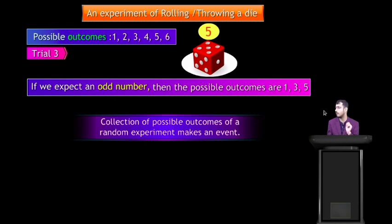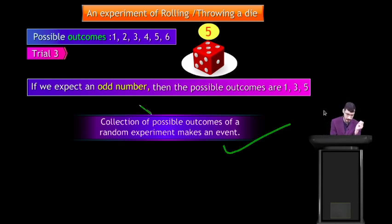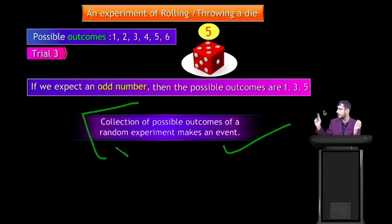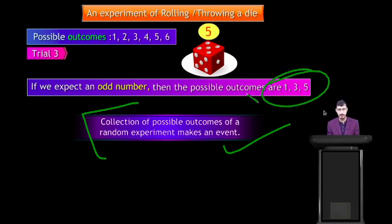Collection of possible outcomes of a random experiment makes an event. For example, odd numbers give outcomes 1, 3 and 5 — there are 3 possible outcomes, and that is also an event, represented as E3.